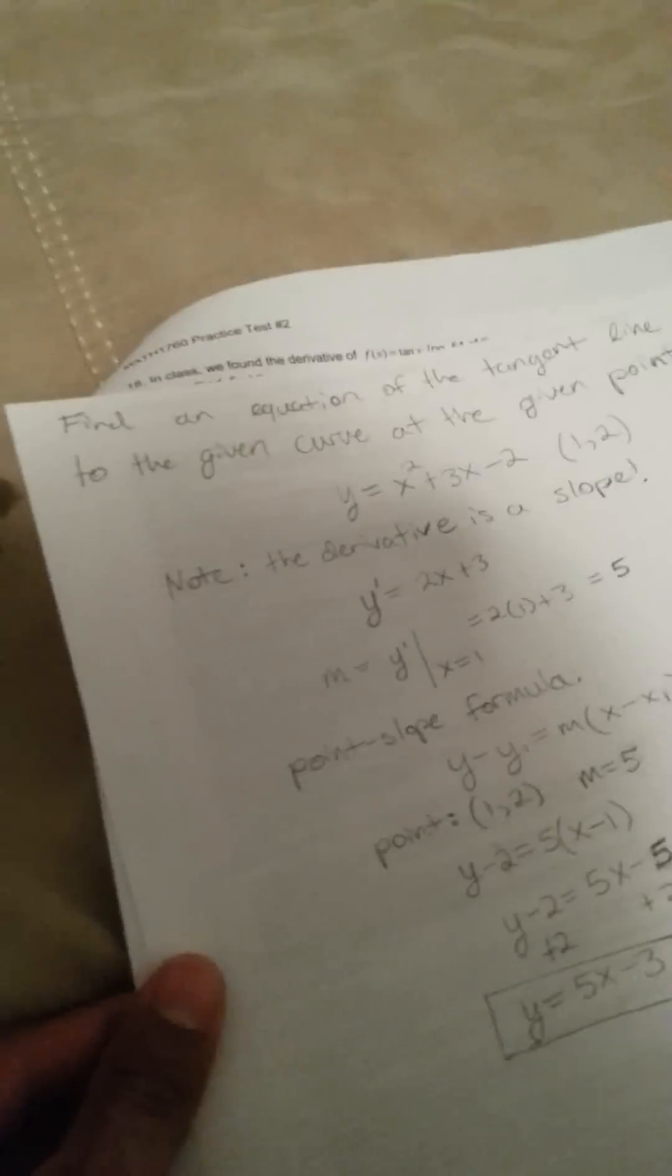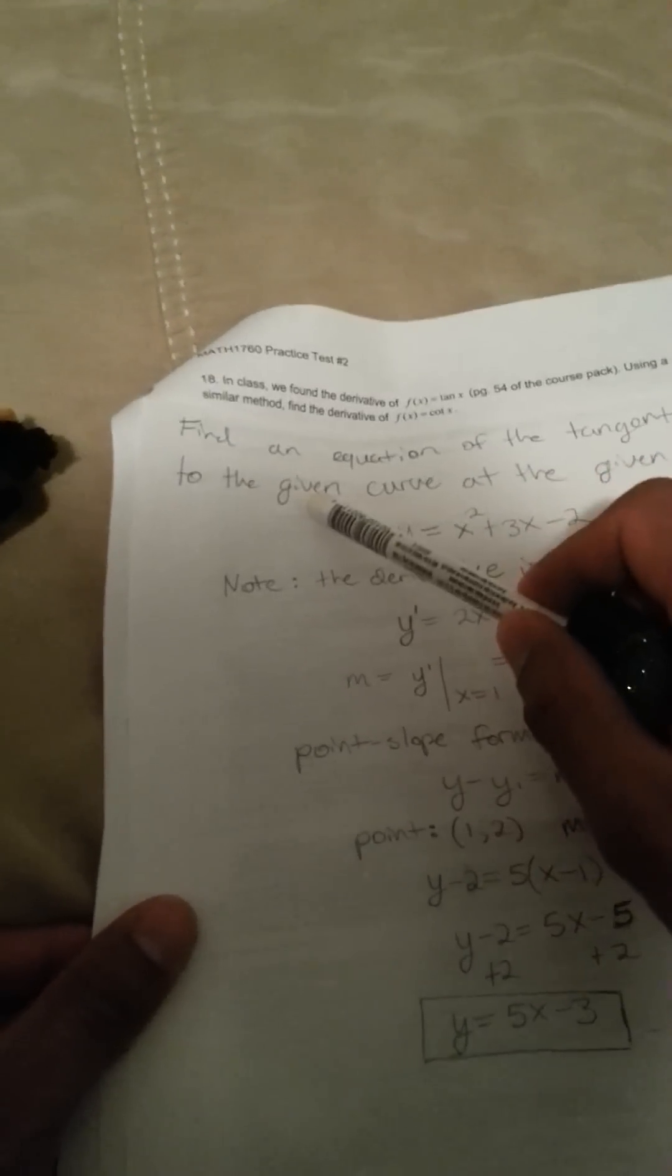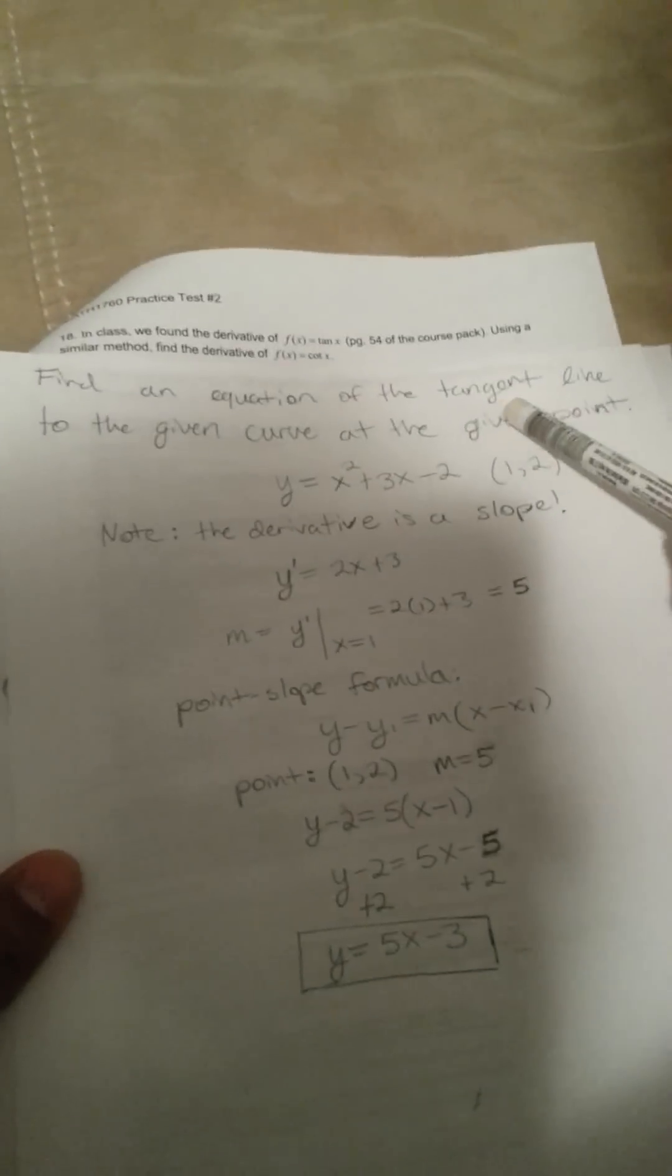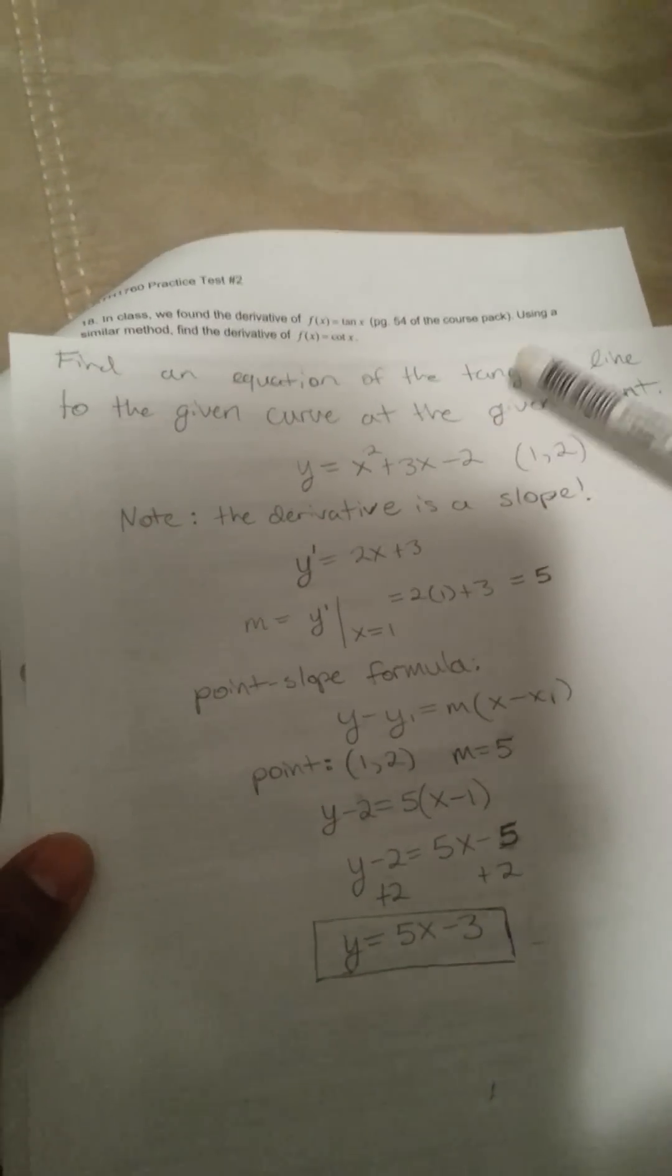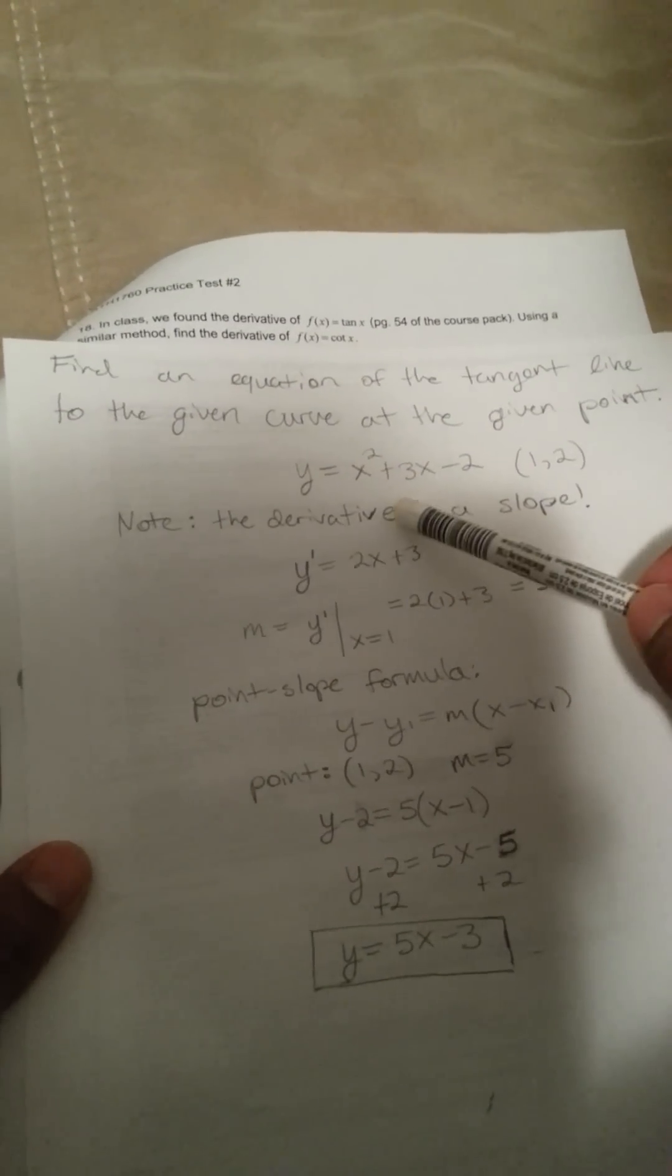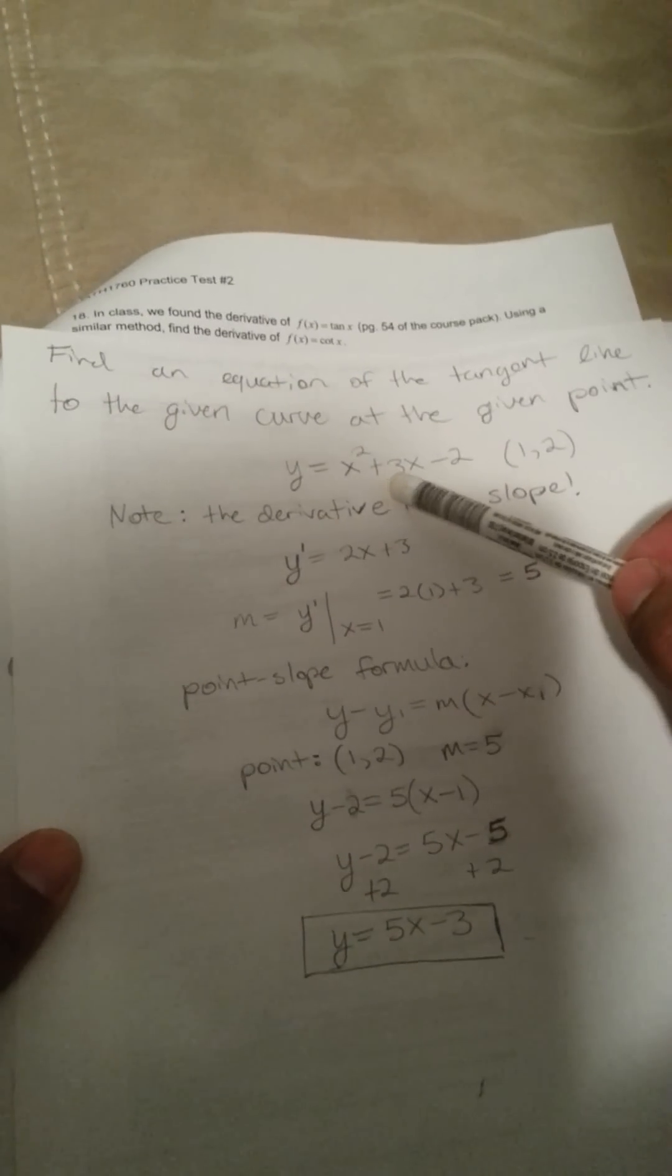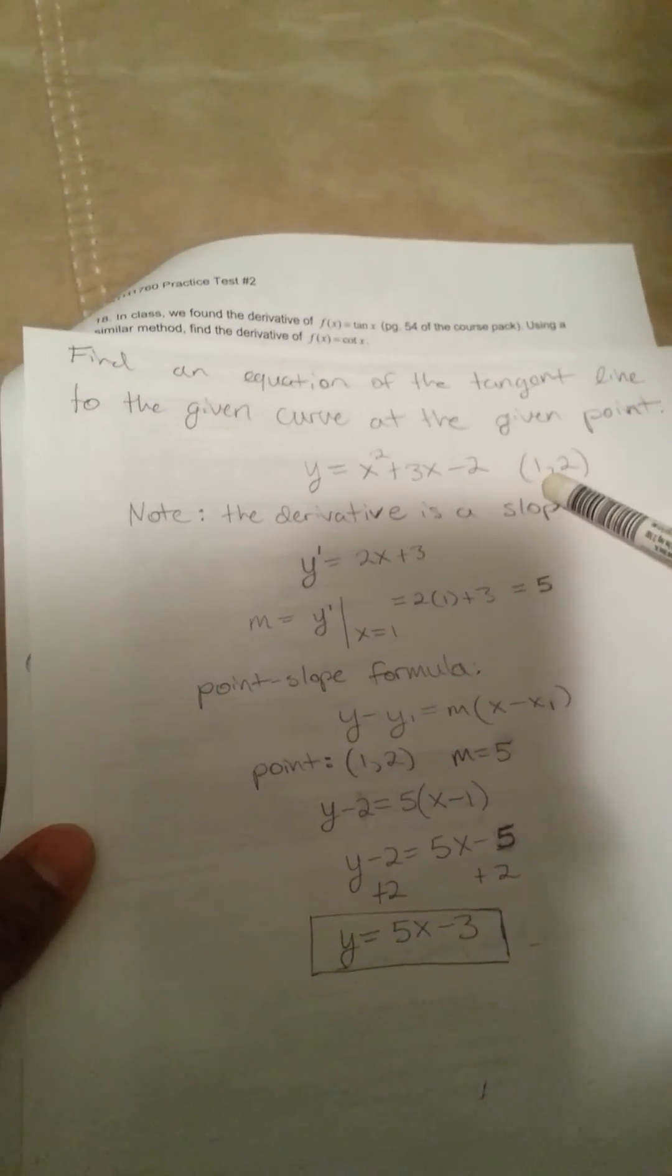So, this is what we have over here. We have this equation where we have to find the equation of the tangent line to the given curve at the given point. So, this is what we're given: y equals x squared plus 3x minus 2 at the point (1, 2).